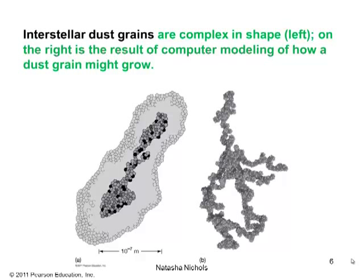Let's talk about interstellar dust a little bit more. As you see in frame A, these dust grains are complex in shape. In frame B, it's the result of computer modeling of how a dust grain might grow. We also have a scale of 10 to the minus 7 meters. Remember, 10 to the minus 9 meters is 1 nanometer, so 10 to the minus 7 would be 100 nanometers — they are very, very small.